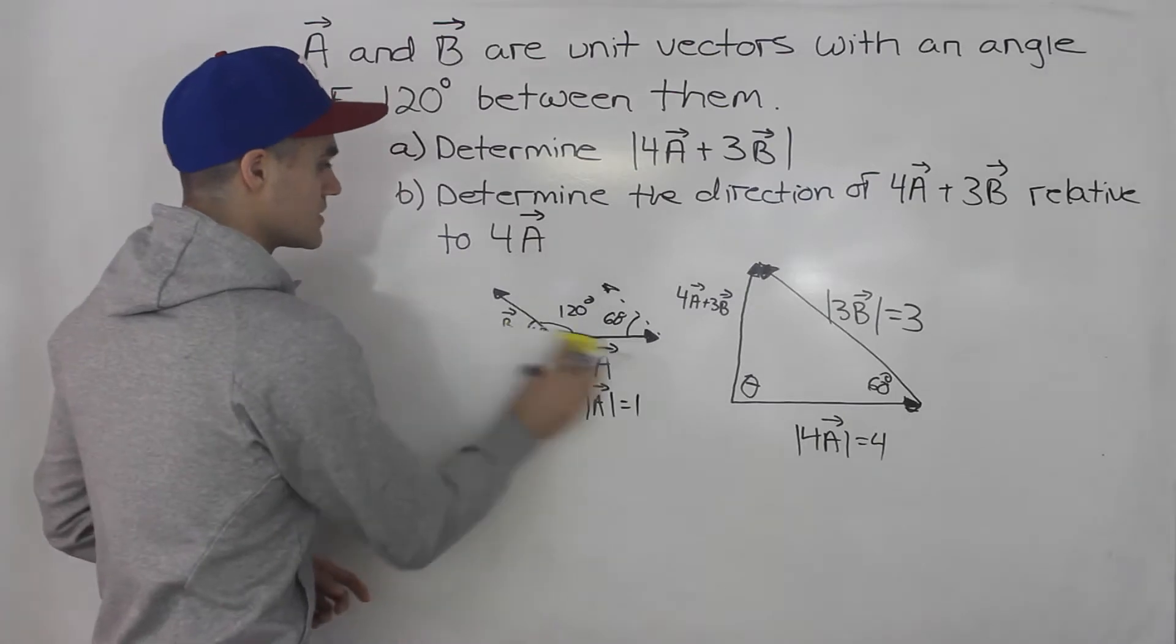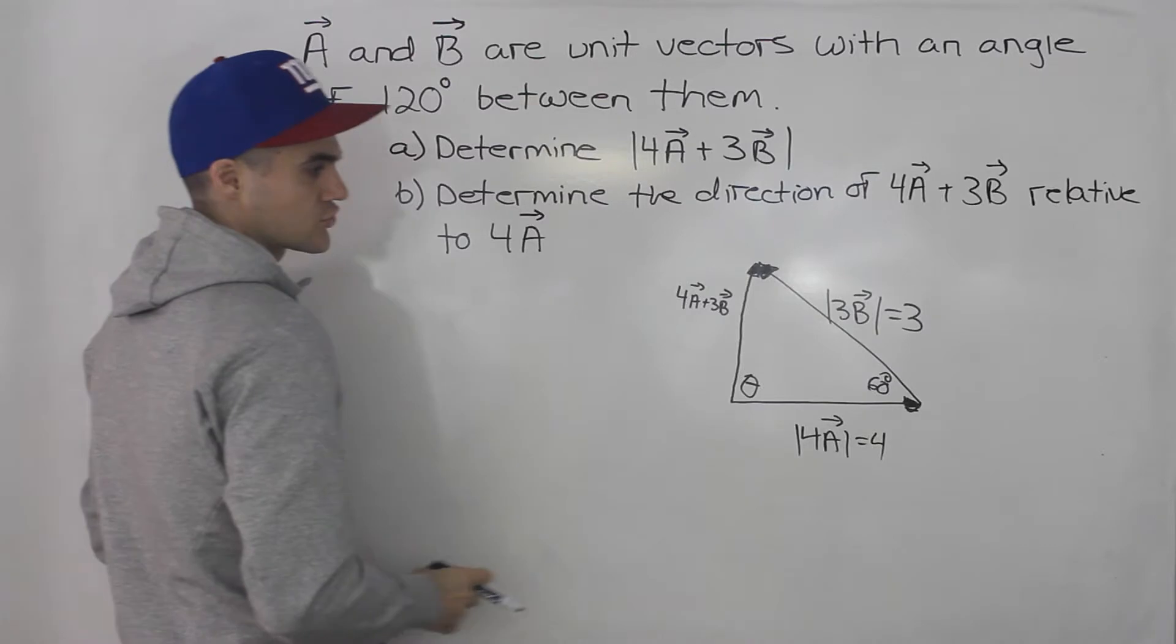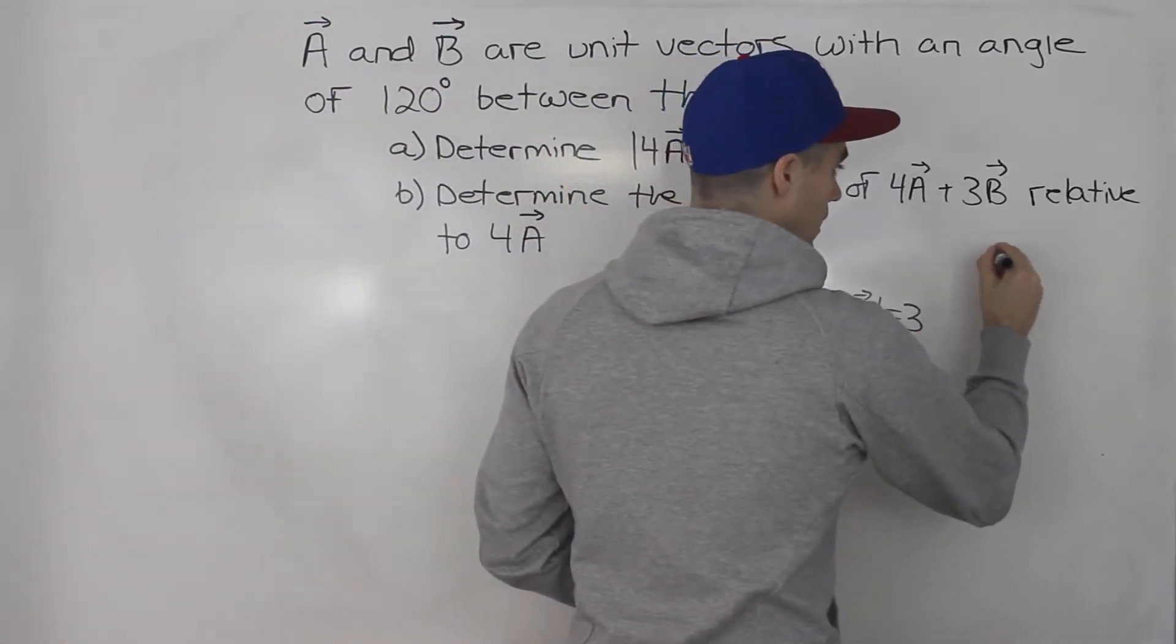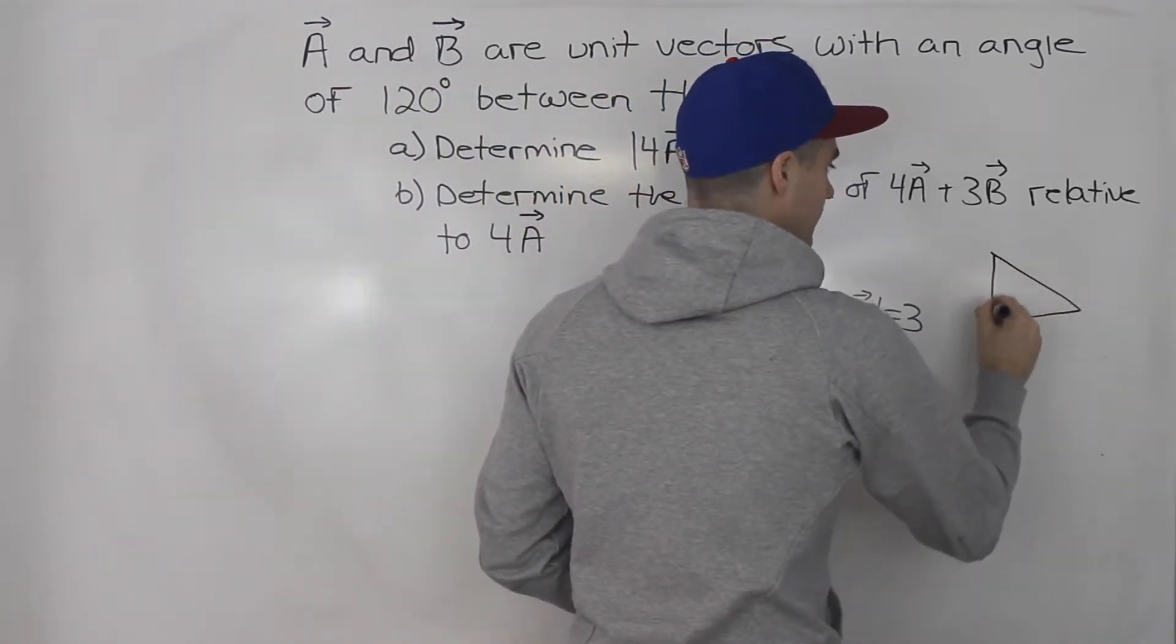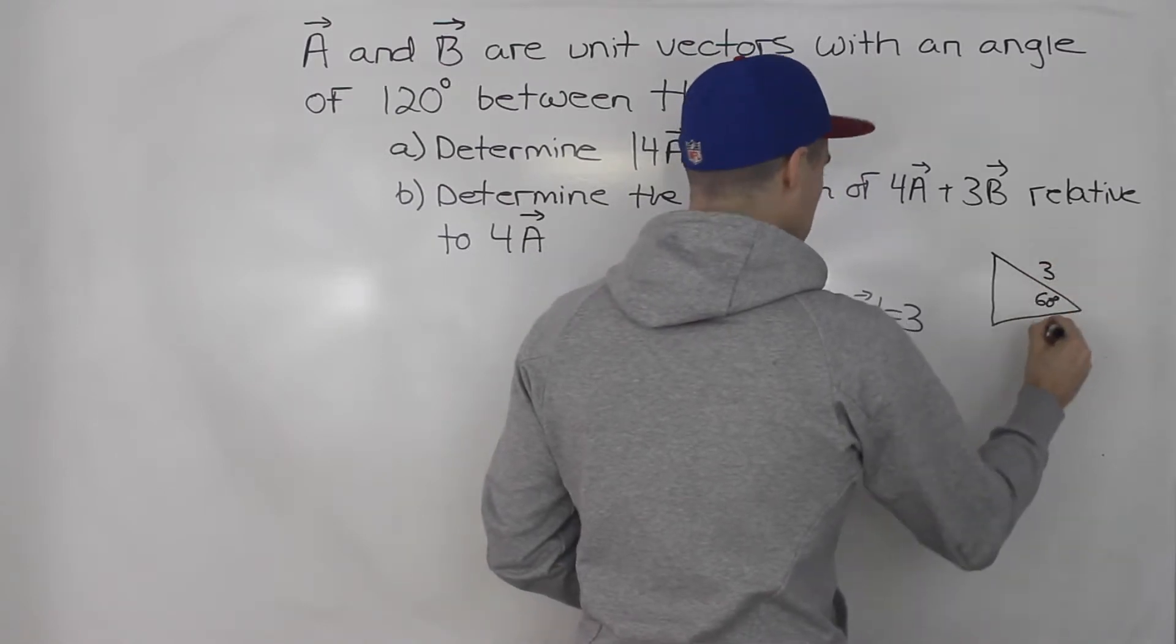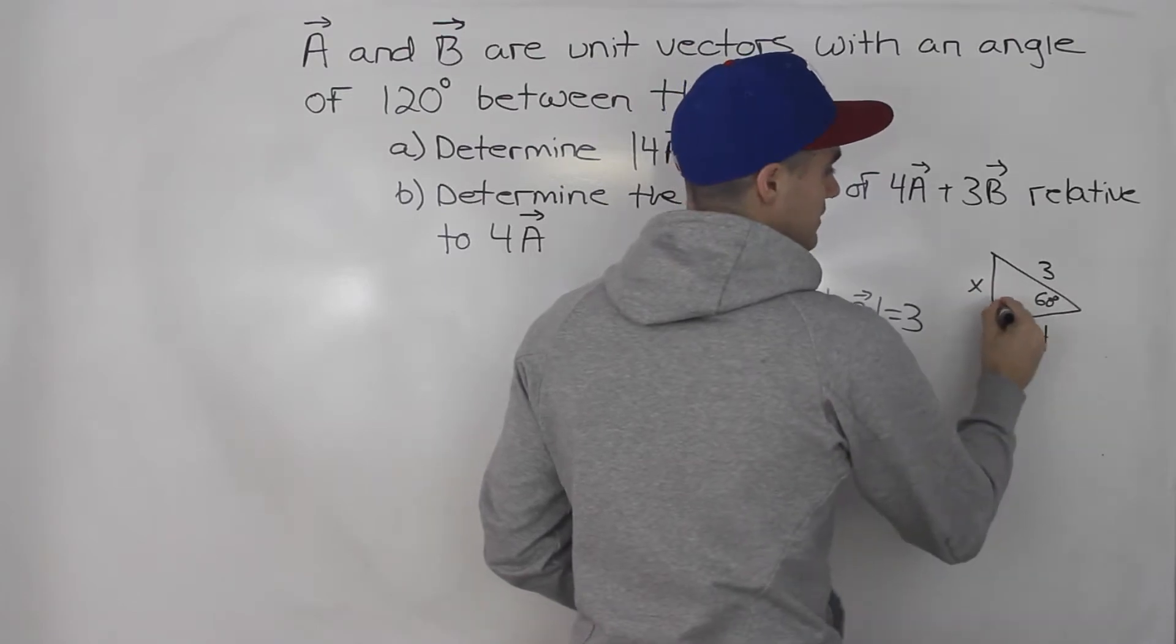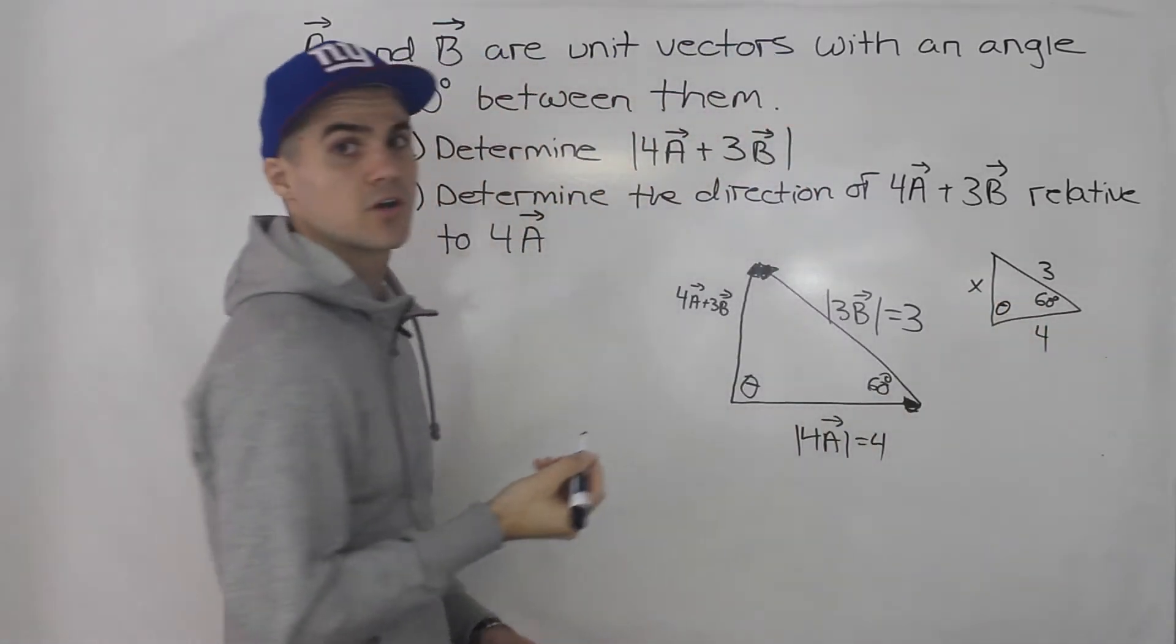So now notice that we just have a triangle. We have a triangle where if I draw a smaller one out, we have an angle 60 degrees here. We got 3, we got 4, and we're solving for x and theta. That's pretty much it.